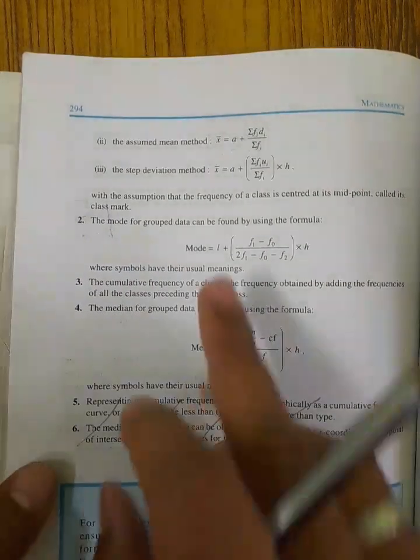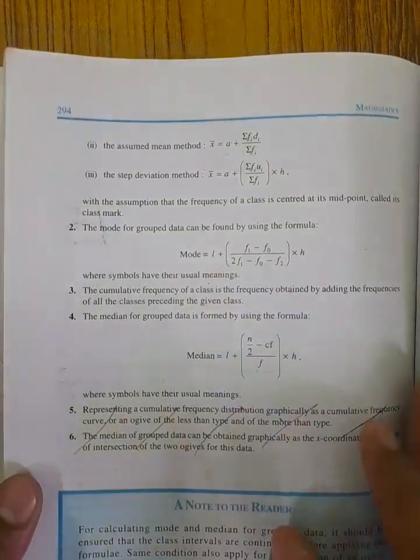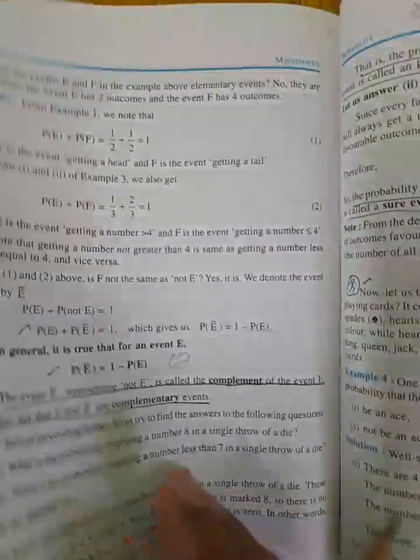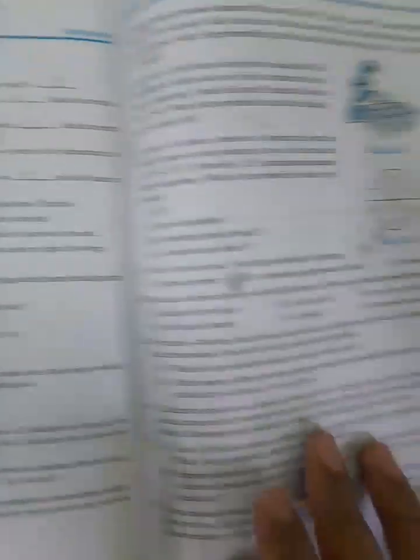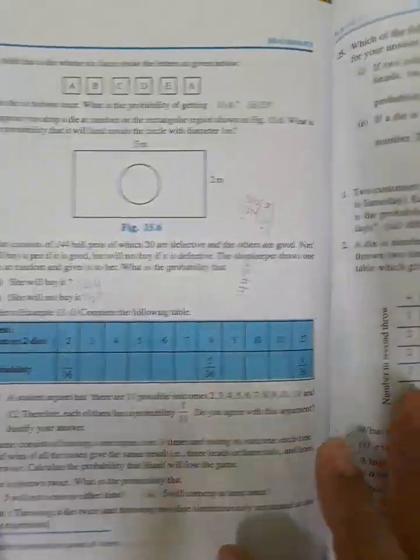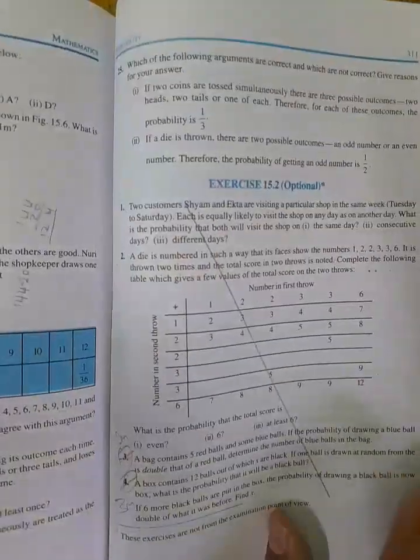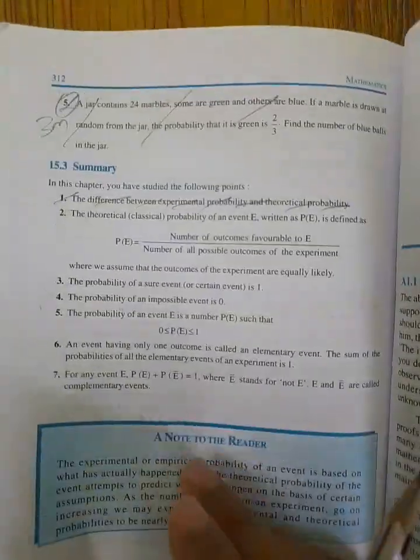In the Statistics summary: 1st point, 2nd point, 3rd and 4th points are covered; 5th and 6th are omitted. Unit 15: Probability — the introduction is omitted. Probability theoretical approach is omitted.